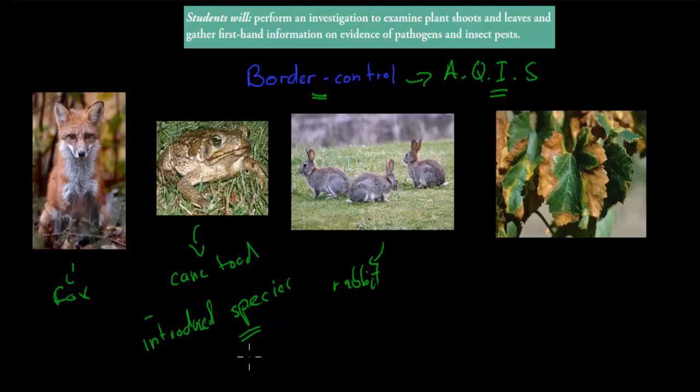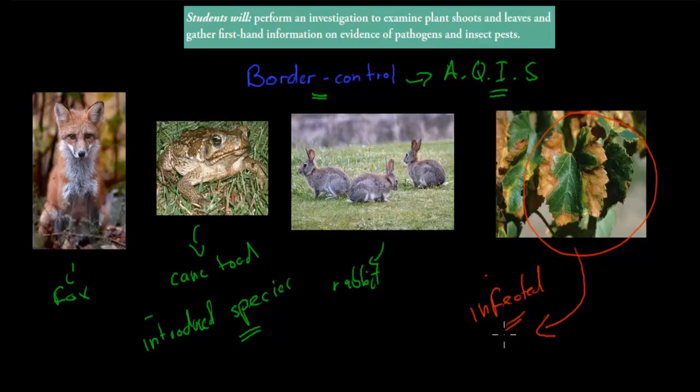The fox, the cane toad and the rabbit have caused havoc. So the Australian Quarantine Inspection Services make sure that introduced species don't enter Australia. But they also make sure that disease doesn't enter Australia. For example, here we have a leaf which is infected by a pathogen — which might be a new pathogen with basically no cases in Australia yet. But if this leaf were to enter Australia, the infection might spread from that small leaf to other parts, and then the infection would take over Australia.